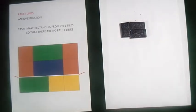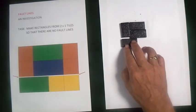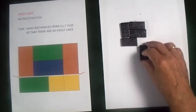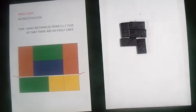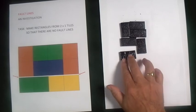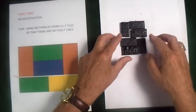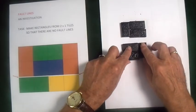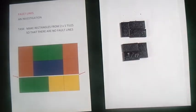I'm going to keep building. I'm going to put one across there and one across here and one across here. I've now made a rectangle. But look, it's got a fault line going all the way through there.